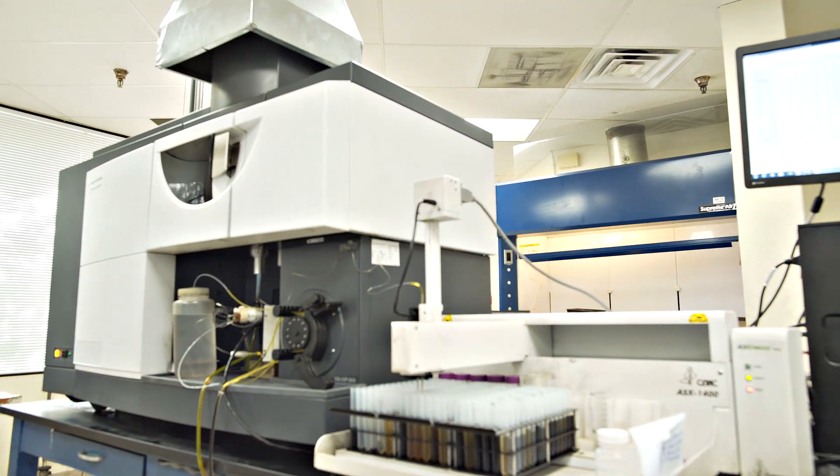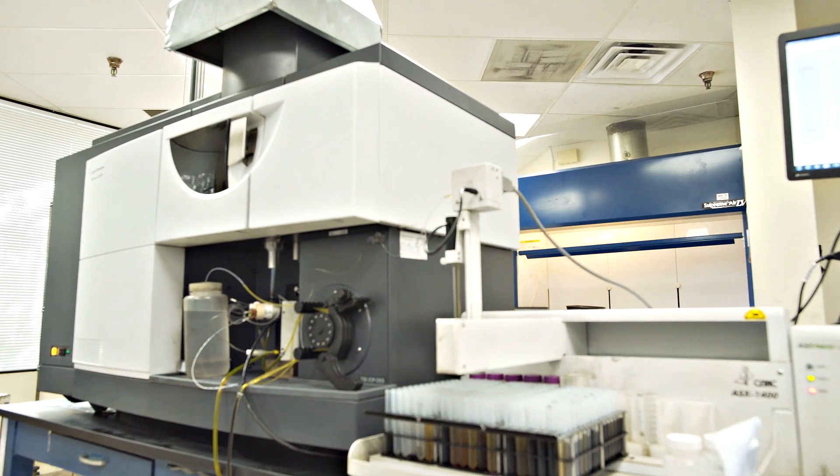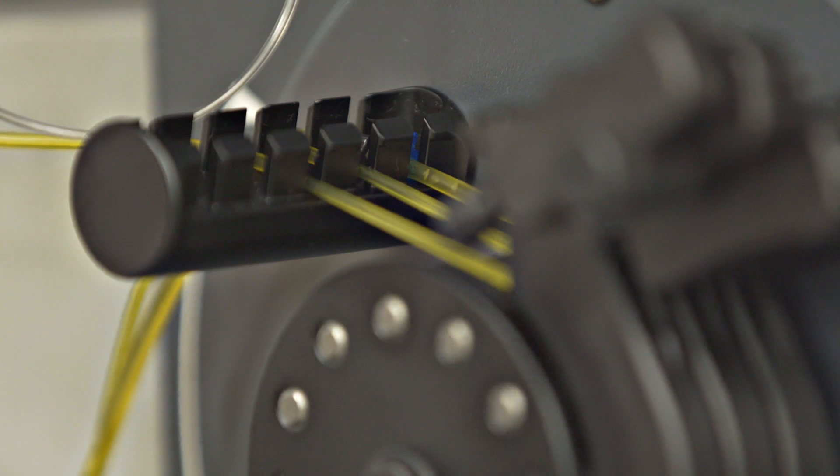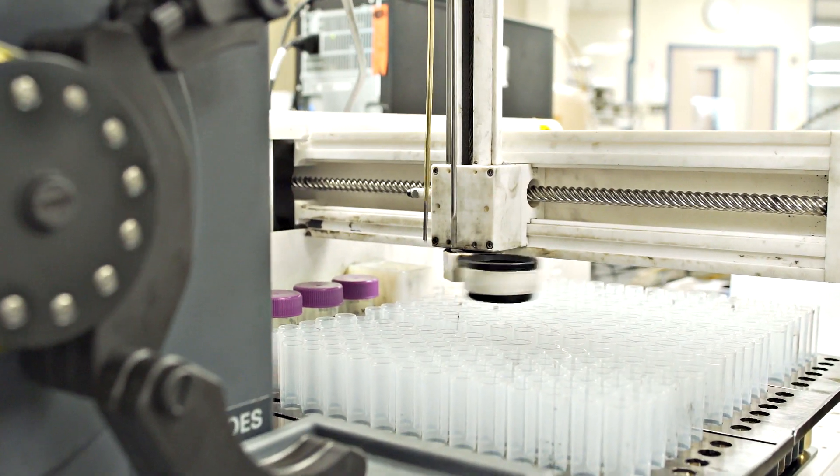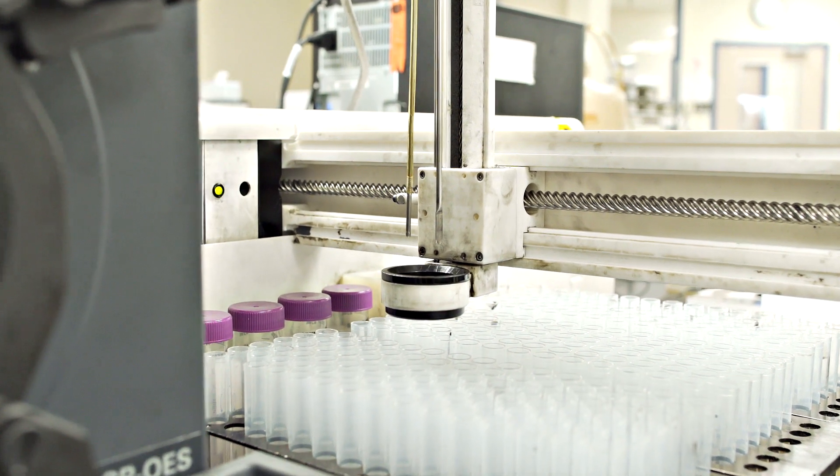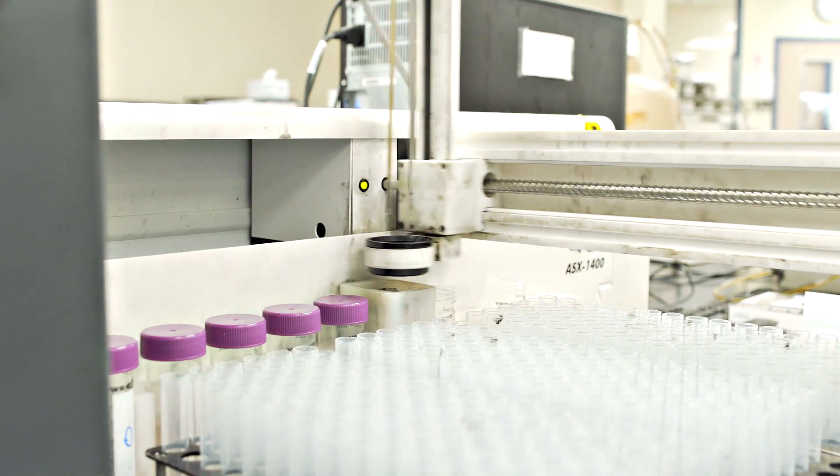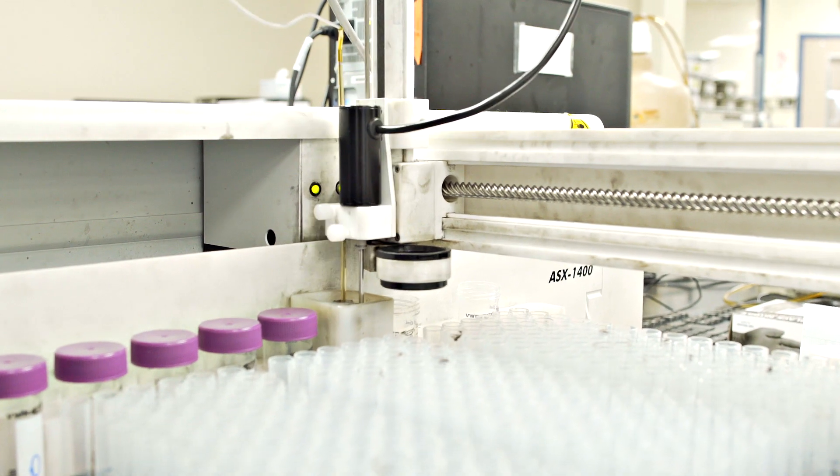Emission spectroscopy is a form of elemental analysis used for determining metal from wear, contamination, and oil additives. Over 20 metals can be quantified down to one part per million. The elemental analysis is quick and the results are highly accurate.